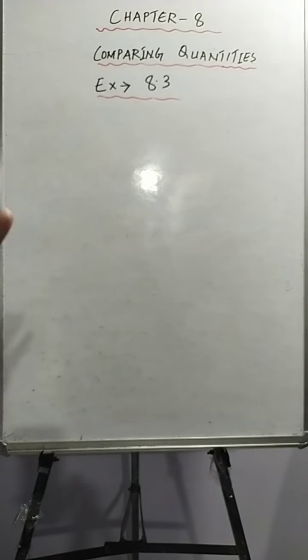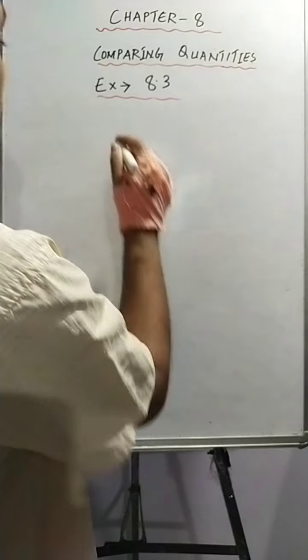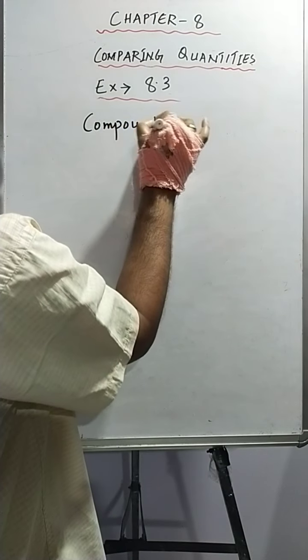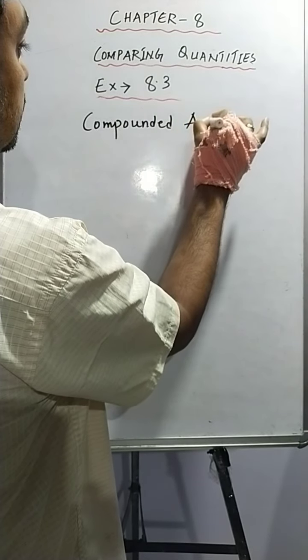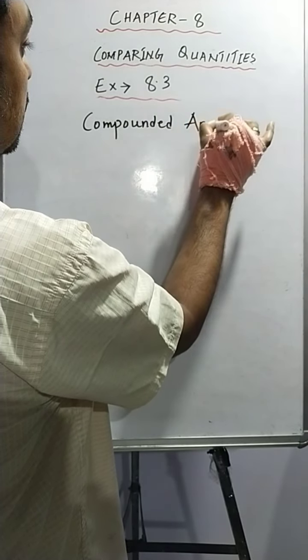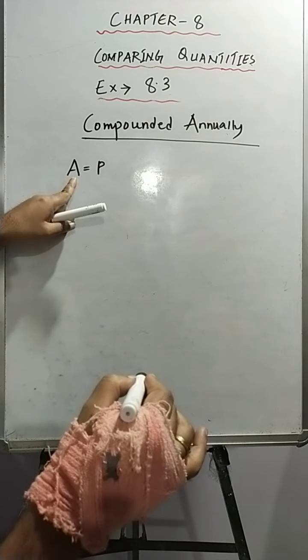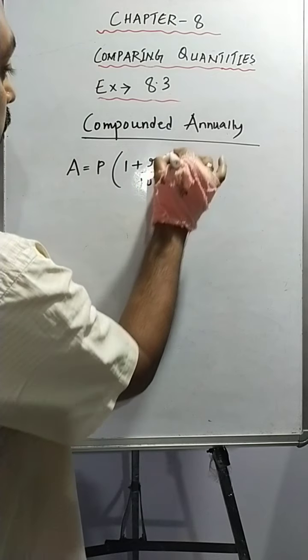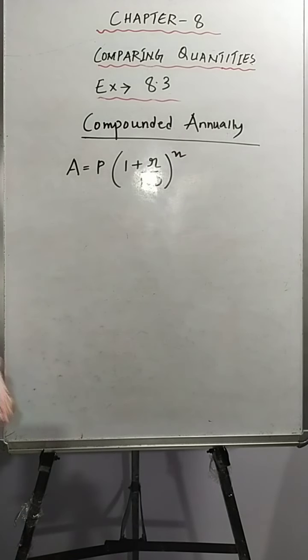Today we'll learn how to do parts A and B of question number one, but before that I will explain the formulas you need to apply in this exercise. The first formula to apply is when it is written 'compounded annually.' In CI, the first value you must find is the amount — after that only can you find the CI value. If compounded annually, the formula for amount is: A = P(1 + r/100)^n.